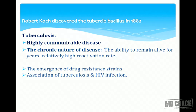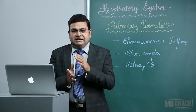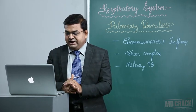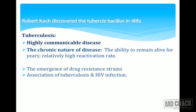The property of the tubercle bacillus is its ability to remain alive in an inactive form for many many years. It has a relatively high reactivation rate — whenever a person's immune status goes down, the tubercle bacillus gets reactivated and that person suffers from tuberculosis. The problem with eradication is mainly because of drug-resistant strains and the close association of tuberculosis with HIV infection.